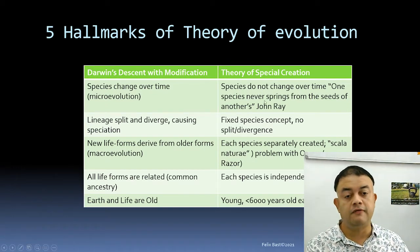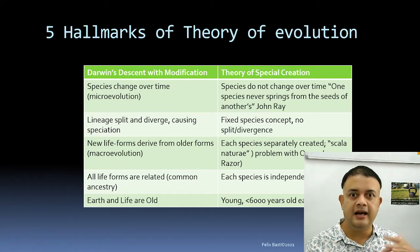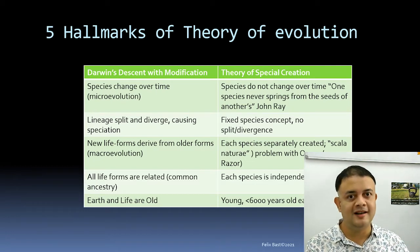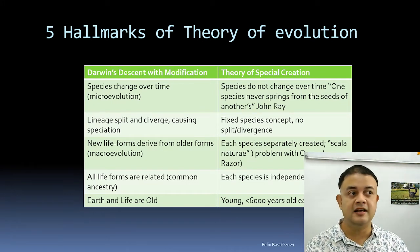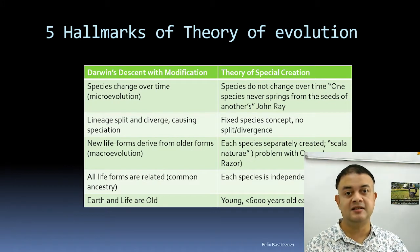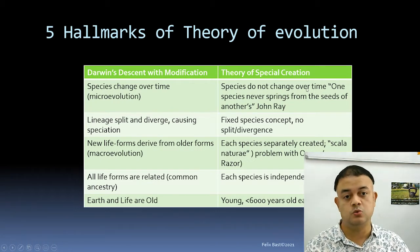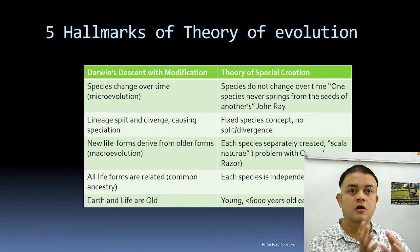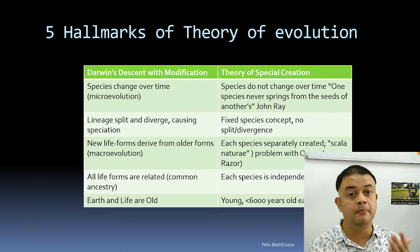John Ray, the famous botanist who predated Linnaeus in naming plant species, famously said one species never springs from the seeds of another. The idea that species are always static is written in the Bible as well — that is the special creation view. But evolution is not instantaneous; it takes time for one population to diverge into two.